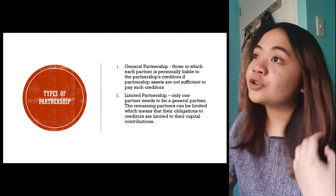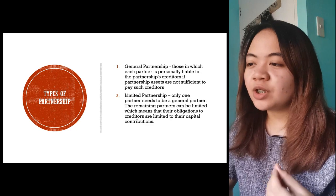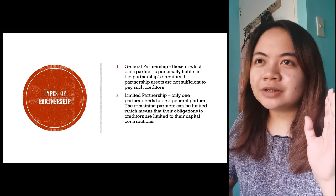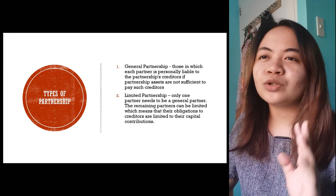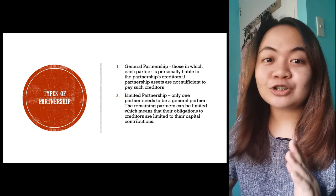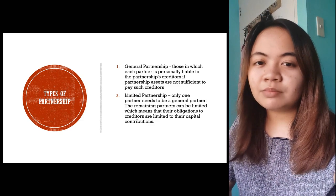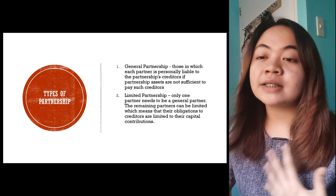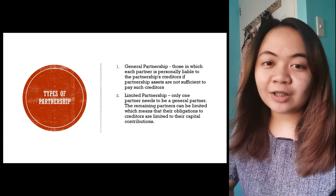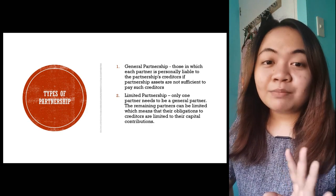There are different types of partnership categorized by different factors. Depending on liability, we have general partnership, where each partner is personally liable. Meaning, if the partnership incurs debts and has no funds to pay, creditors can go after the personal assets of the partners. We know that the partnership is a separate entity from the partners. However, if it's a general partnership, once all means inside the partnership are exhausted and debts remain, creditors can pursue the personal assets of the partners. That's general partnership — the partners are called general partners with unlimited liability.